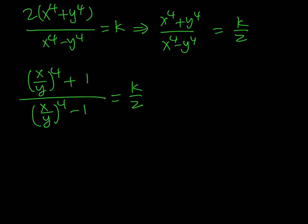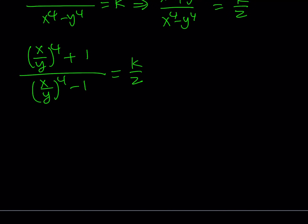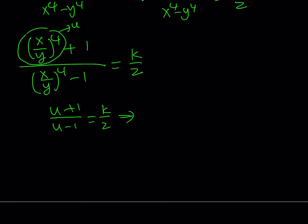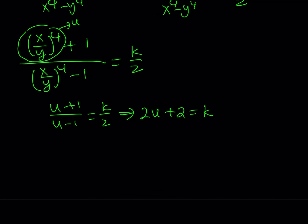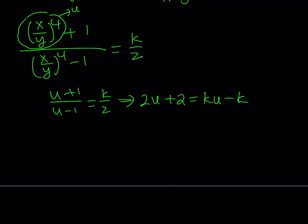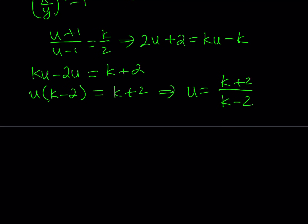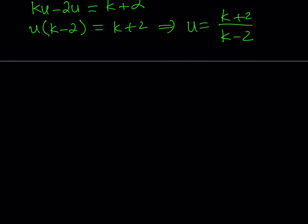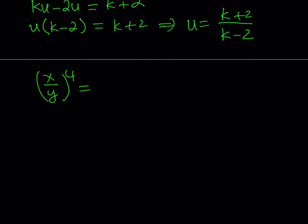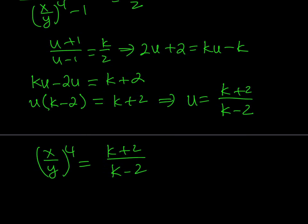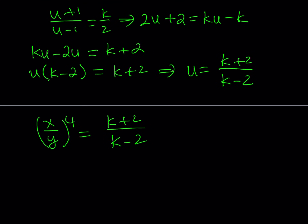We'd like to get (x/y)⁴ by itself, so let's call it u. We get: (u + 1) / (u - 1) = k/2. Isolating u: 2u + 2 = ku - k. Putting all u terms on one side: ku - 2u = k + 2, so u(k - 2) = k + 2, giving us u = (k + 2) / (k - 2). Back-substituting, (x/y)⁴ = (k + 2) / (k - 2). Since k is the given expression, it's perfectly fine to write it that way.